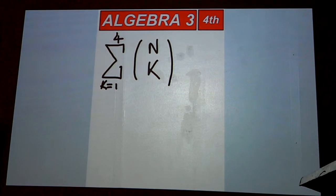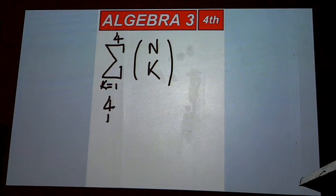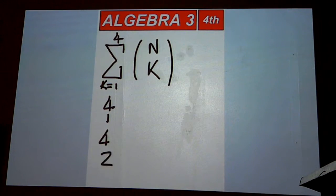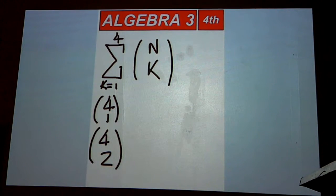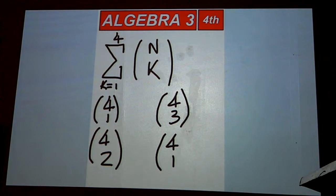You have four different things to add up with N choose K, and it's going to start with four choose one, then four choose two, four choose three, and then four choose four.